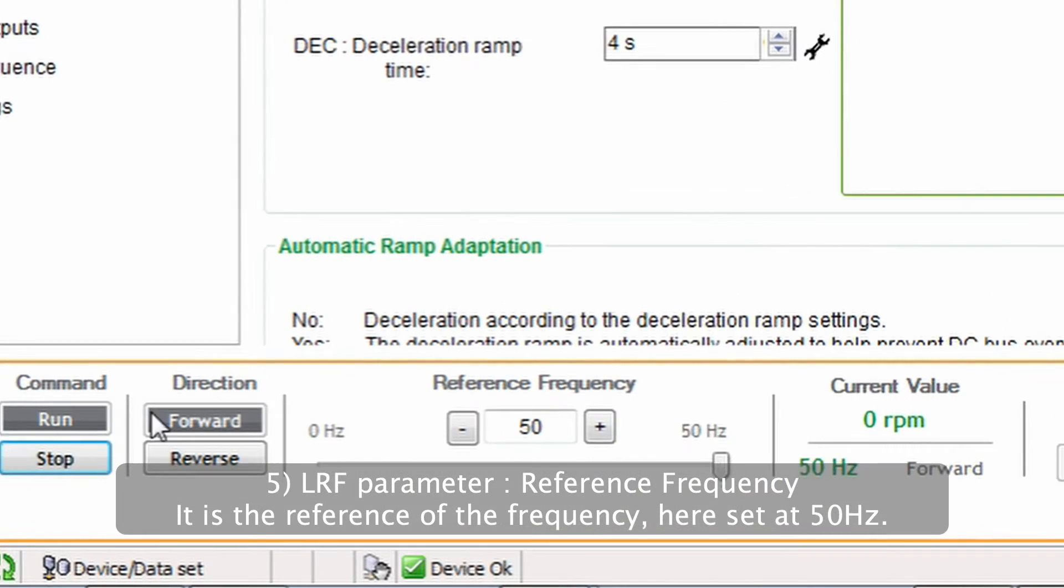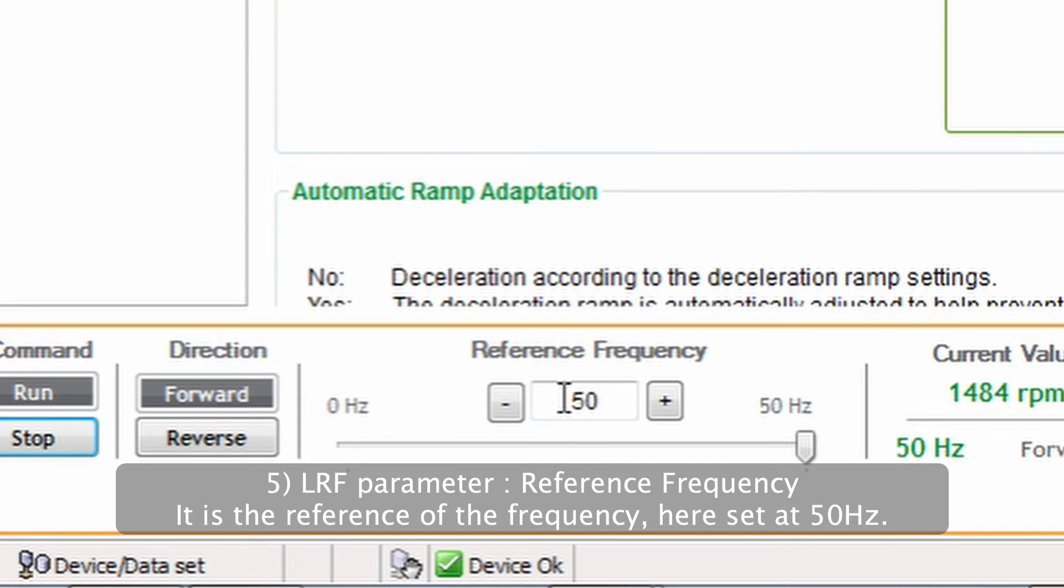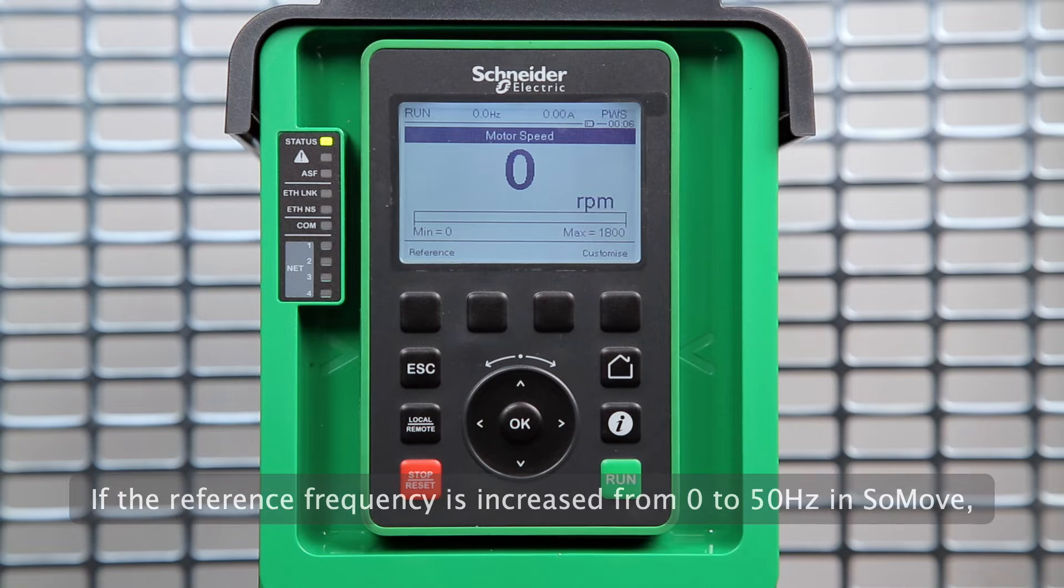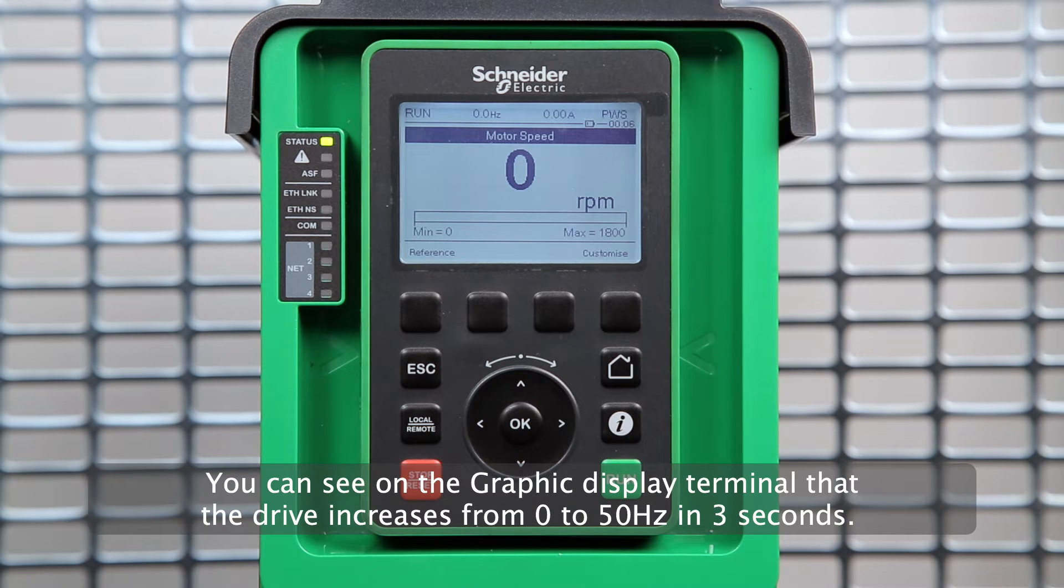Number 5: LRF parameter, reference frequency. It is the reference of the frequency. Here, set at 50 hertz. If the reference frequency is increased from zero to 50 hertz in SoMove, you can see on the Graphic Display Terminal that the drive increases from zero to 50 hertz in three seconds.